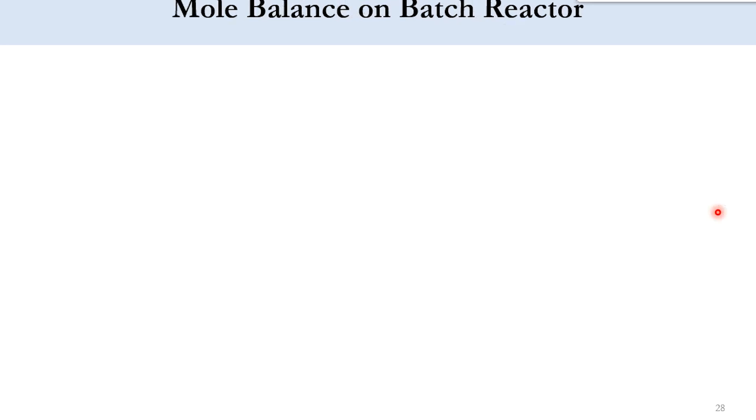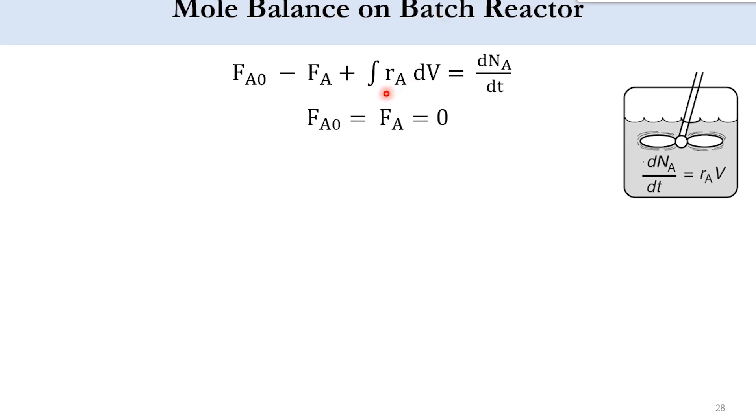Applying the mole balance on the batch reactor, first we will write the general mole balance equation which is f_a0 minus f_a plus integral r_a dv equals d n_a over dt. Now there is no continuous feed to the system, it's a closed system, so accordingly f_a naught and f_a will be equal to zero. The system is well mixed, it is spatially uniform, so this integral will cancel out and we will finally get r_a V equals d n_a over dt.